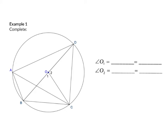Example 1. Complete. The first part is about angle O1. Angle O1 is at the center of the circle, so we first see from which arc it is formed — it is formed from arc BC. If I start from arc BC, I can form an angle at the circumference by moving up to angle D or to the left to angle A. So angle O1 is twice angle BDC, and it is twice angle BAC.